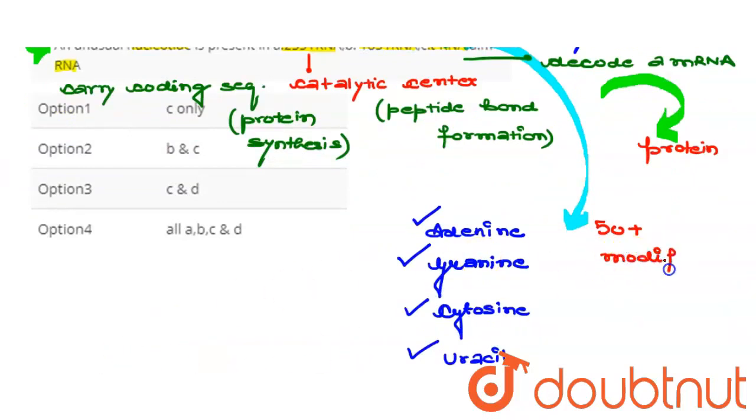So here the unusual nucleotides are present in tRNA. On this basis, our correct answer here will be option first, and the remaining options are clearly wrong options.